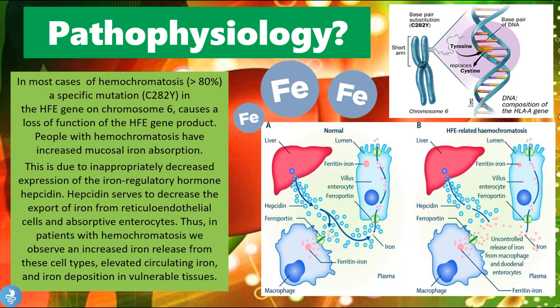In most cases of hemochromatosis — more than 80% — a specific mutation called the C282Y mutation occurs in the HFE gene on chromosome 6, causing a loss of function of the HFE gene product. On the short arm of chromosome 6, there is a base pair substitution where cysteine is replaced by tyrosine. Once this happens, people with hemochromatosis have an increased mucosal iron absorption, due to inappropriately decreased expression of the iron regulatory hormone called hepcidin.